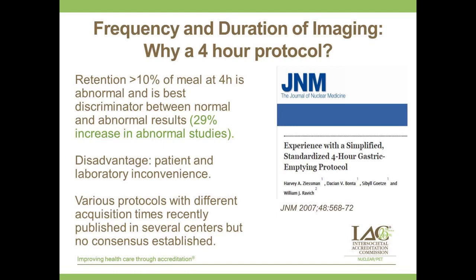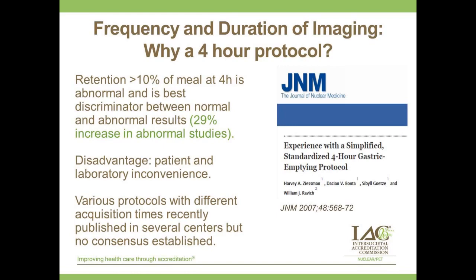Returning to Mr. Rice, the answer to why he first had a normal and then an abnormal study was simply how long the study was carried out. In the first study, considered normal, imaging only went to two hours. In the repeat study, called abnormal, he went out to four hours — and the four-hour image picked up that he had more than 10% of tracer remaining in the stomach. There are many other things that could have differed — meal composition, region of interest, patient preparation — but study duration was the key difference here.